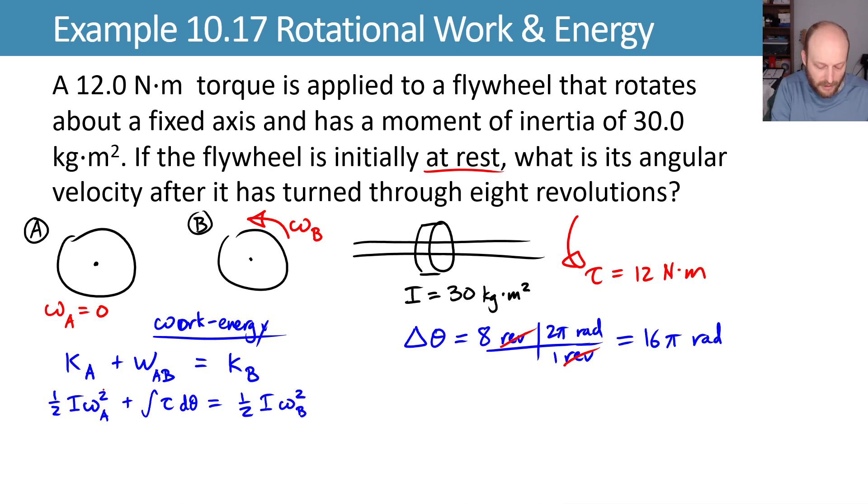We know that omega A is zero, so that makes our life nice. If we have a constant torque, which we do, this is a constant and comes out front of the integral, and we just get the integral of d theta is theta, so we end up with our angular displacement there. That leaves us with torque delta theta equaling one half I omega B squared.